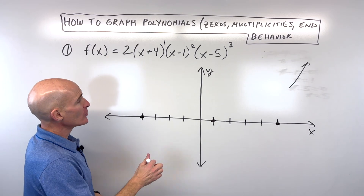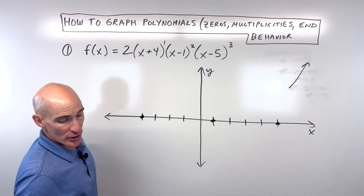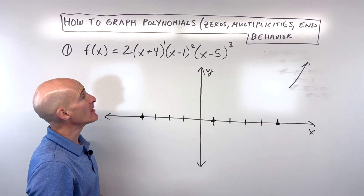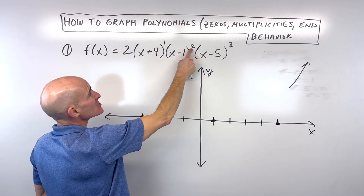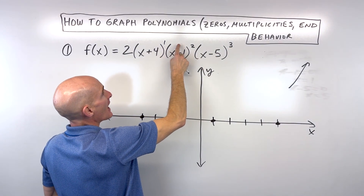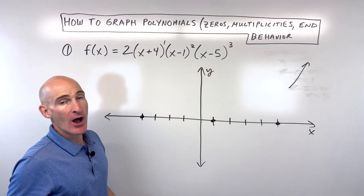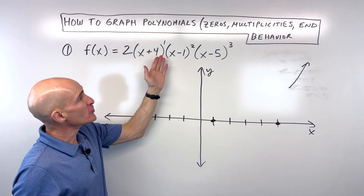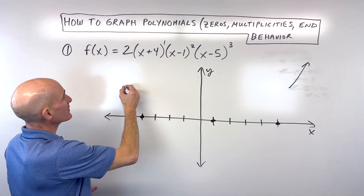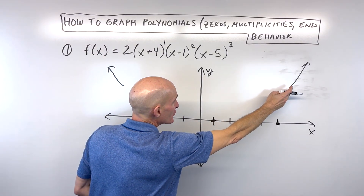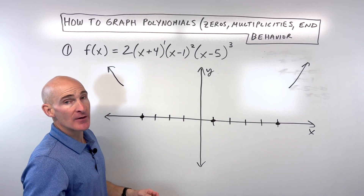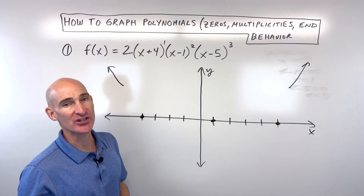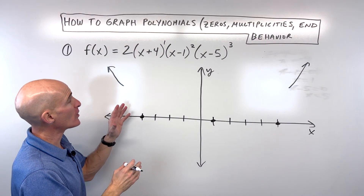If you're not sure about this, you could put in a number like 10 for x, and when you multiply this out, you're going to see it's going to be a really large positive number. But the shortcut is: if the leading coefficient is positive, it's going up to the right. Now, how do we know if it's going up or down to the left? We look at the degree of this polynomial. You don't have to multiply it out — 1 plus 2 plus 3 is 6, so this is a sixth-degree polynomial. When the degree is even, it's going to go the same direction to the left as it does to the right.